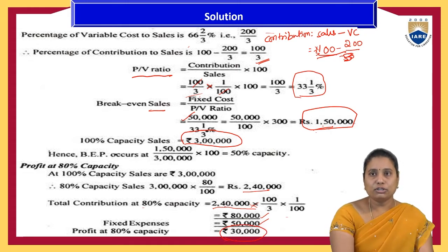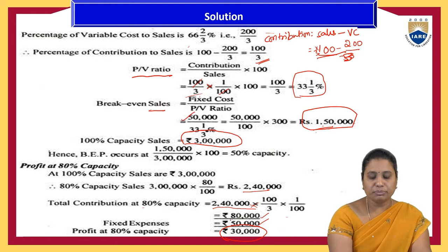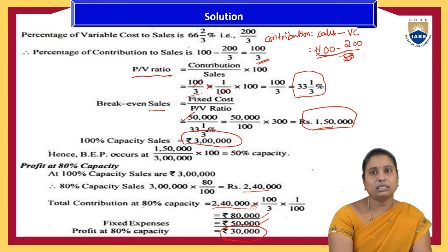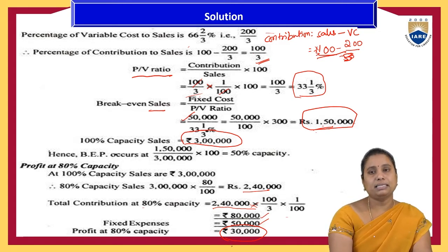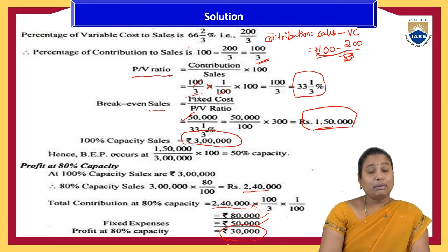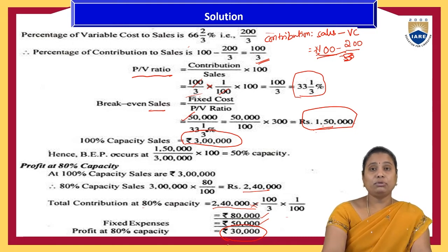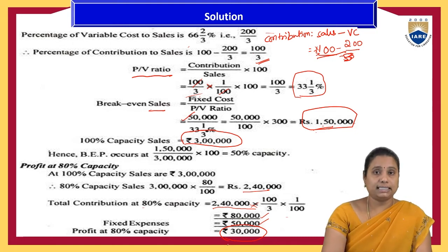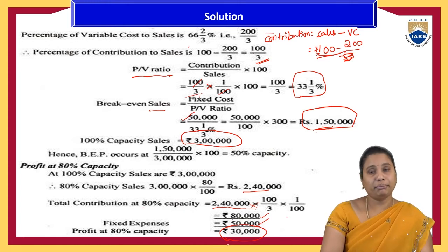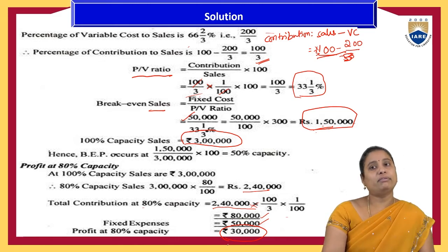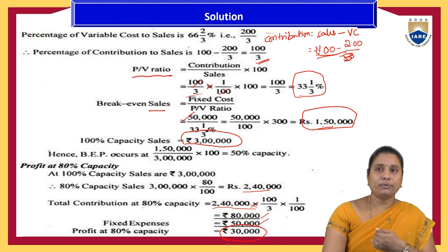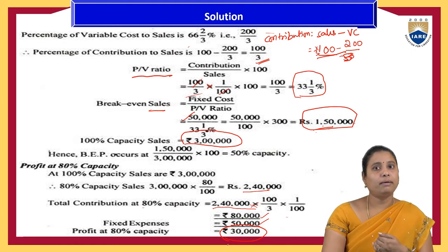This value accumulated to ₹80,000, and out of this ₹80,000, deducting fixed expenses of ₹50,000 gives a profit of ₹30,000 at 80% capacity. From Problem 2, we learned how to calculate BEP and BEP percentage sales when variable cost is given as a percentage of sales, as well as how to calculate expected profits.